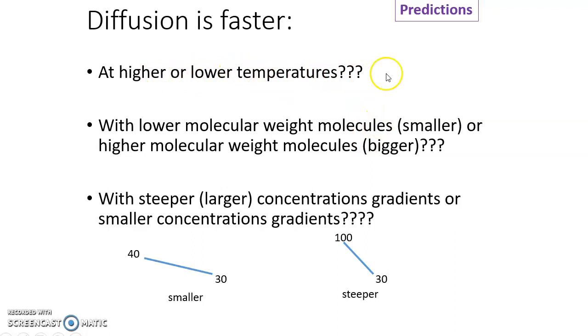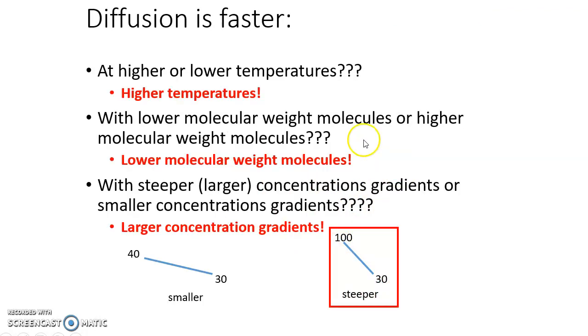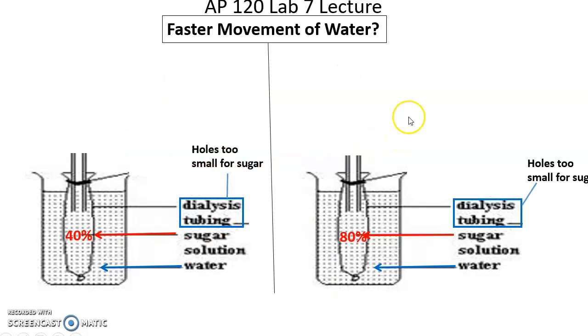Diffusion is faster at higher temperatures or lower? It's higher temperatures. Hotter, faster. Lower molecular weight, smaller, or higher molecular weight, bigger? It's smaller. Smaller things go faster. Smaller things get into the nooks and crannies. And then steeper concentration gradient or smaller concentration gradient? 30% versus 100% to 30%. Obviously very much steeper. If you imagine a ball rolling down the hill, it's going to go faster with a steeper concentration gradient.